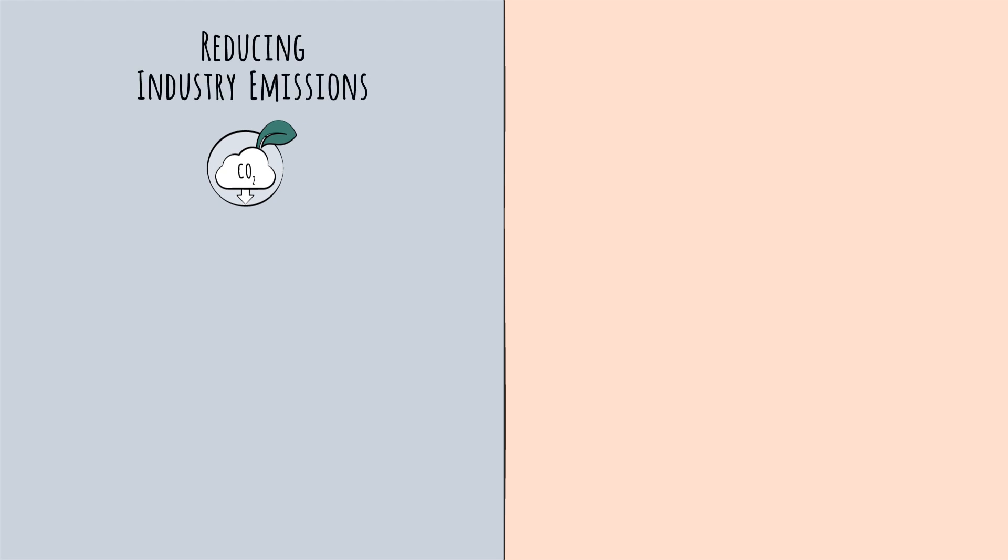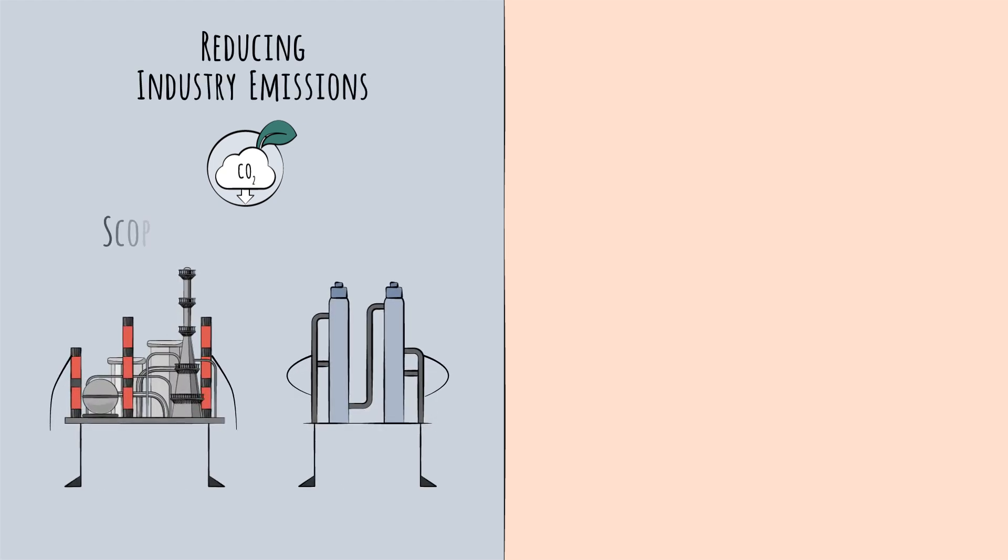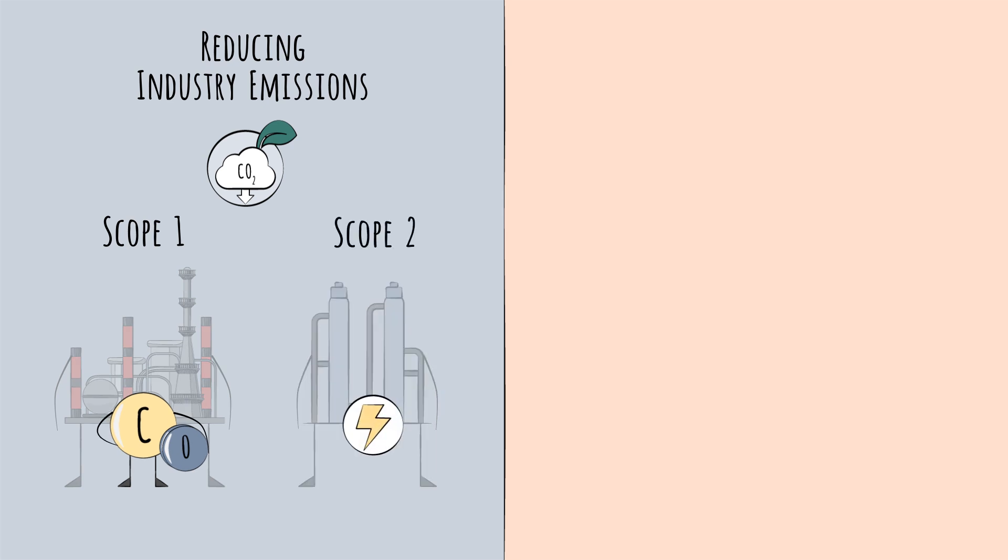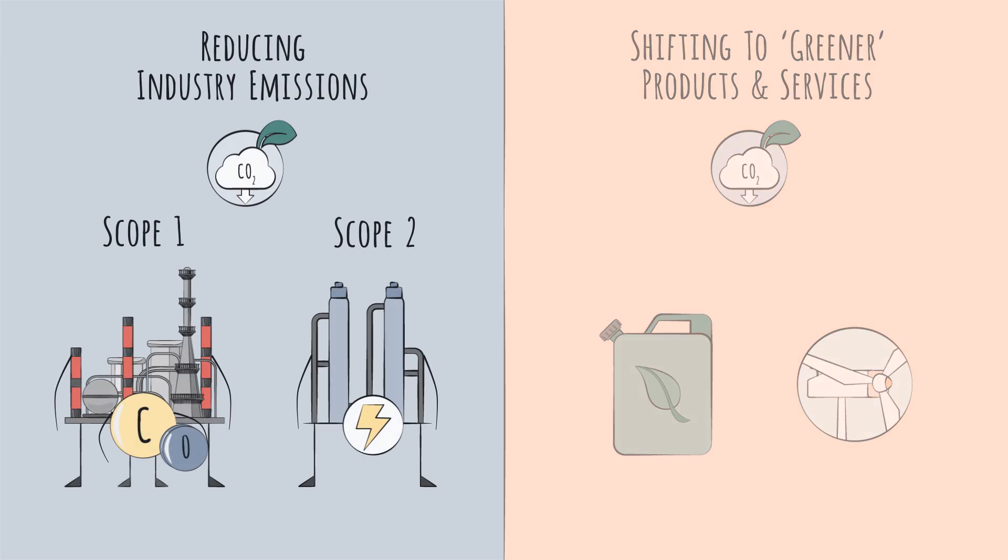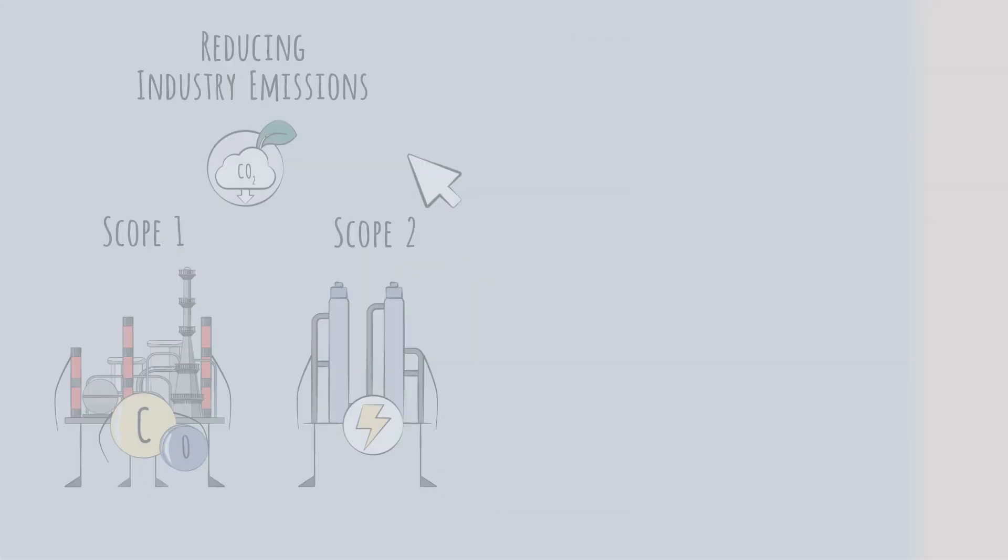The first is via efforts to reduce emissions tied to industry operations. These are scope 1 emissions—direct emissions like CO2 emitted from refineries—and scope 2 emissions, the emissions of purchased electricity. The second way downstream is helping reduce emissions is by shifting toward greener products. In this video we'll cover the first topic, then in the next video we'll cover the second.